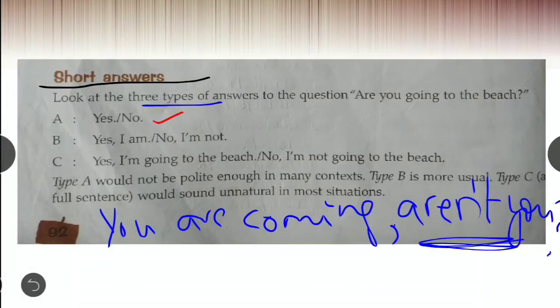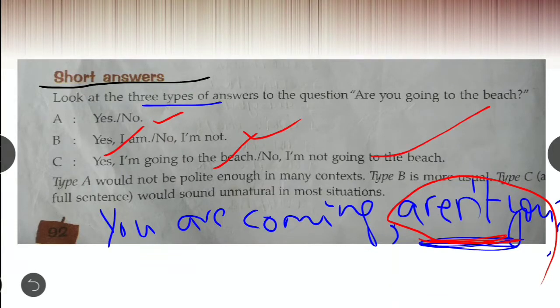You can give yes or no answer without saying anything else. Like, are you coming? Yes. Are you going? No. Next type, you can say yes, I am. No, I am not. The third one, yes, I am going to the beach. No, I am not going to the beach. Full answer. We call them full answer.